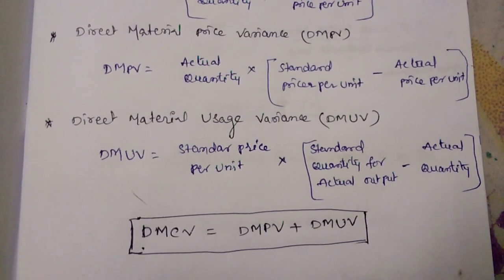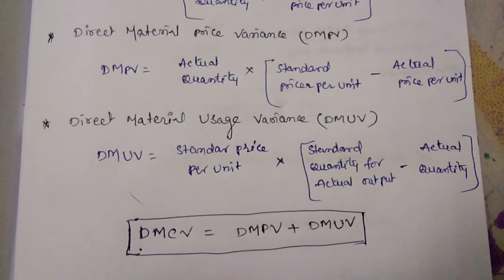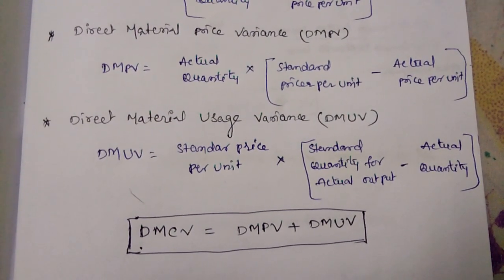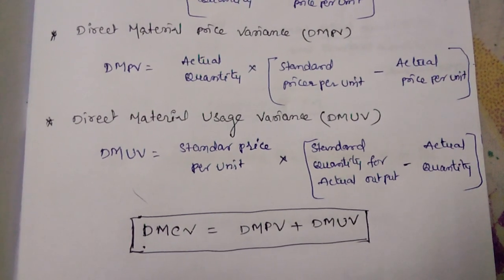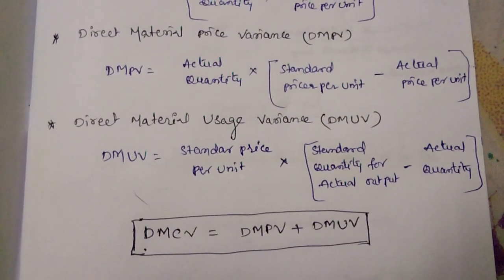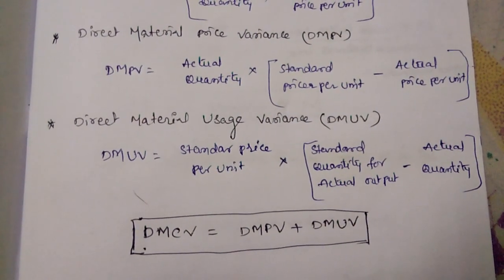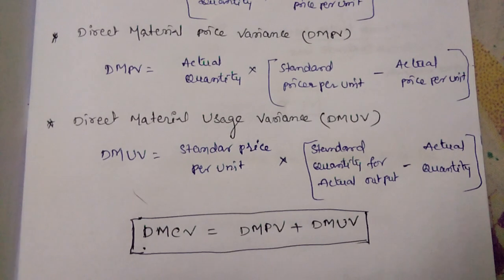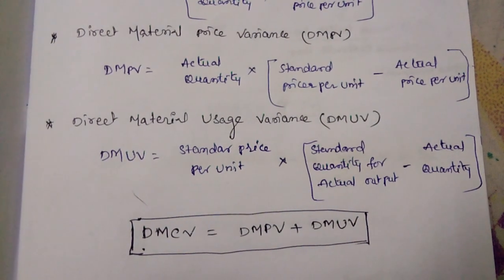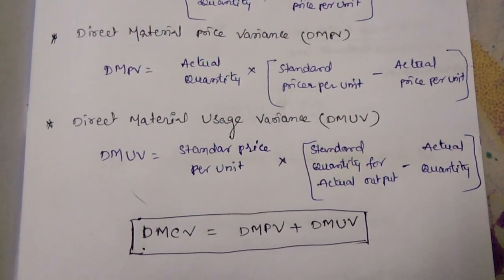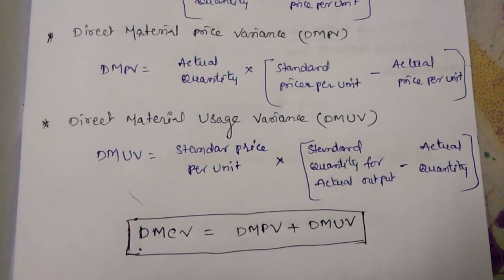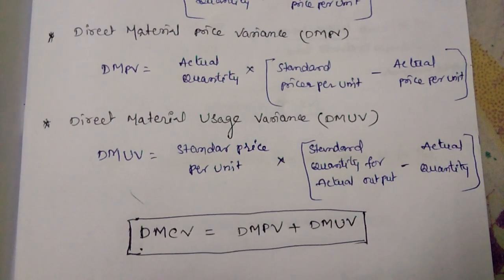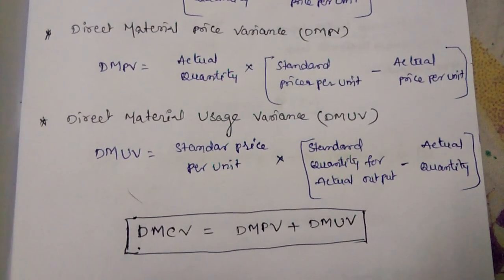The relationship between these variances is: Direct Material Cost Variance equals Direct Material Price Variance plus Direct Material Usage Variance. That is, DMCV = DMPV + DMUV.